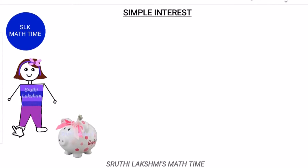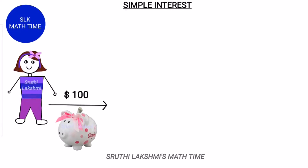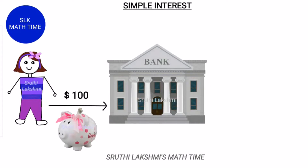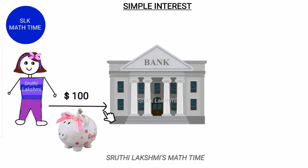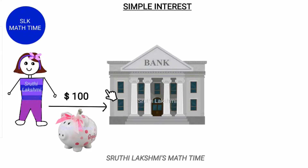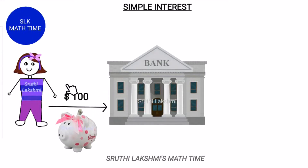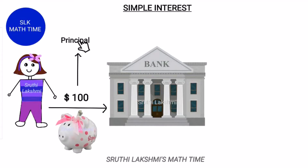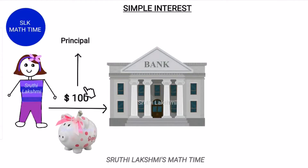So, Sophia went to a bank and she deposited her $100. The $100, or the money that you are depositing, is the principal. So, $100 is the principal here.